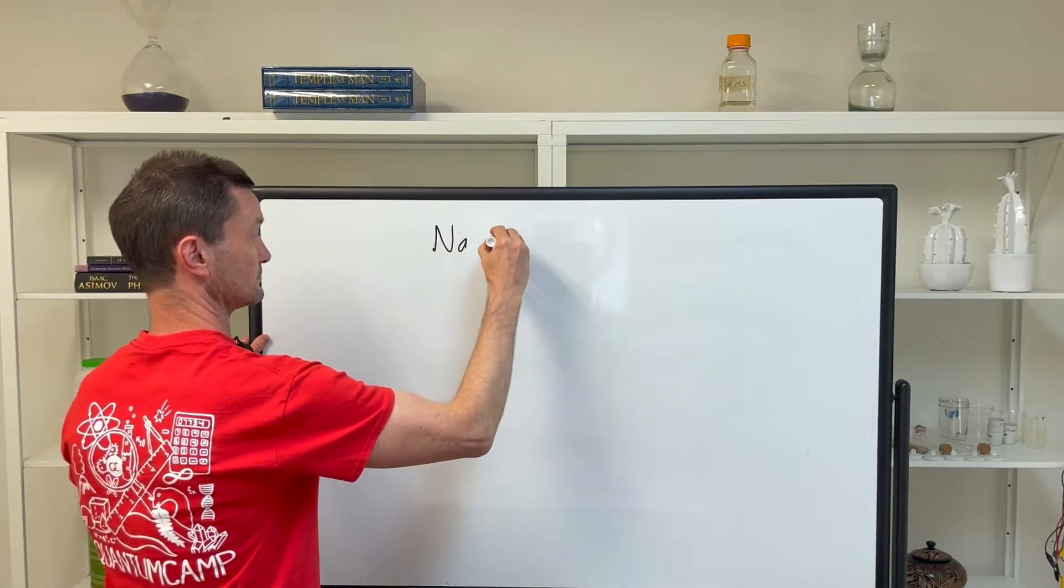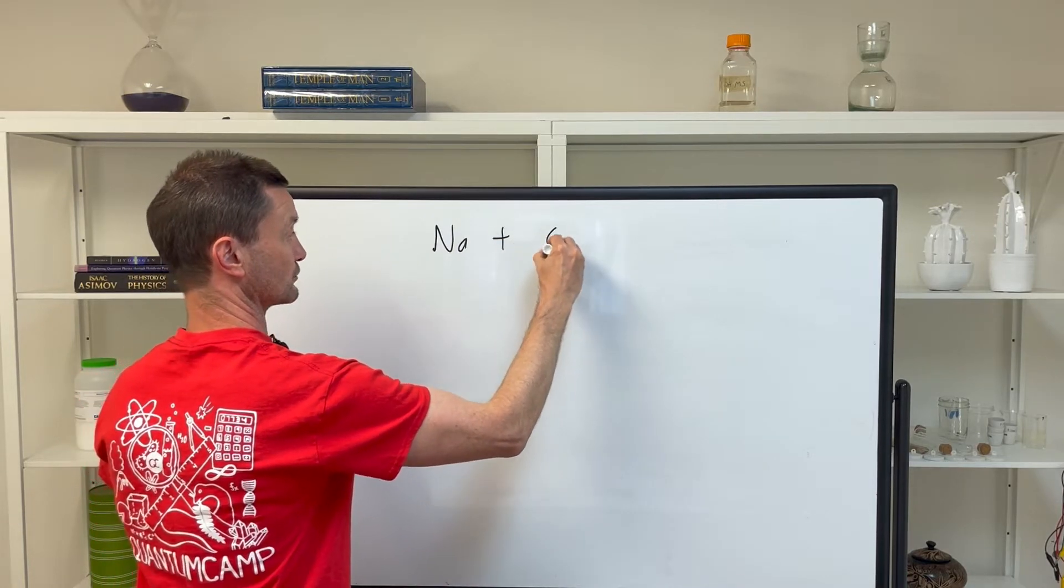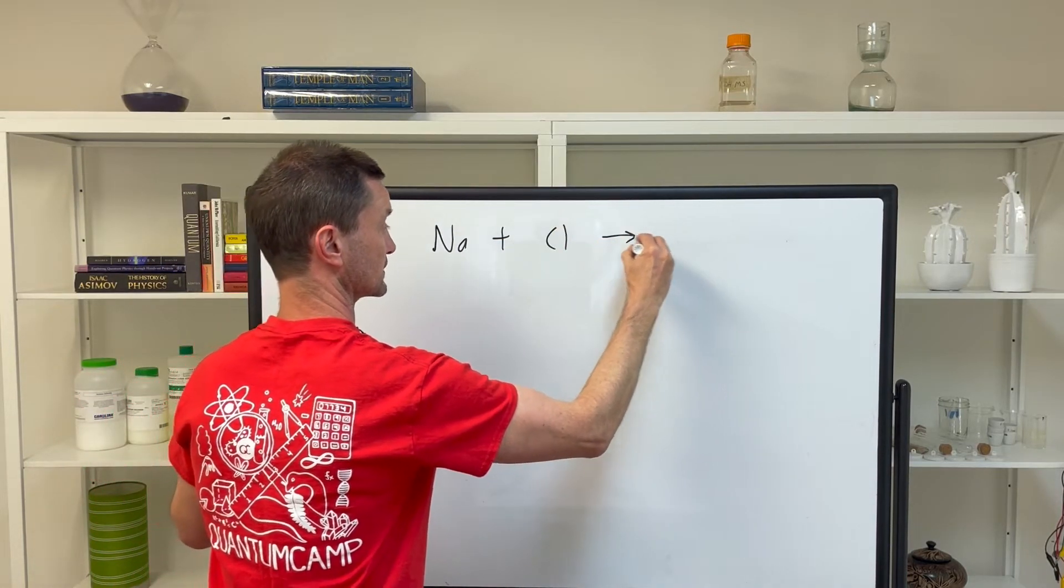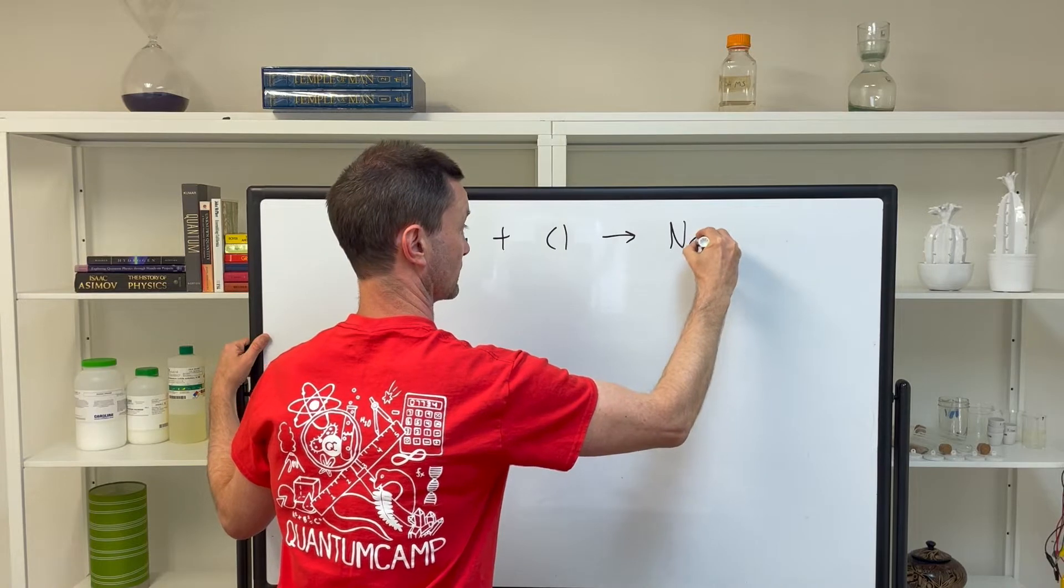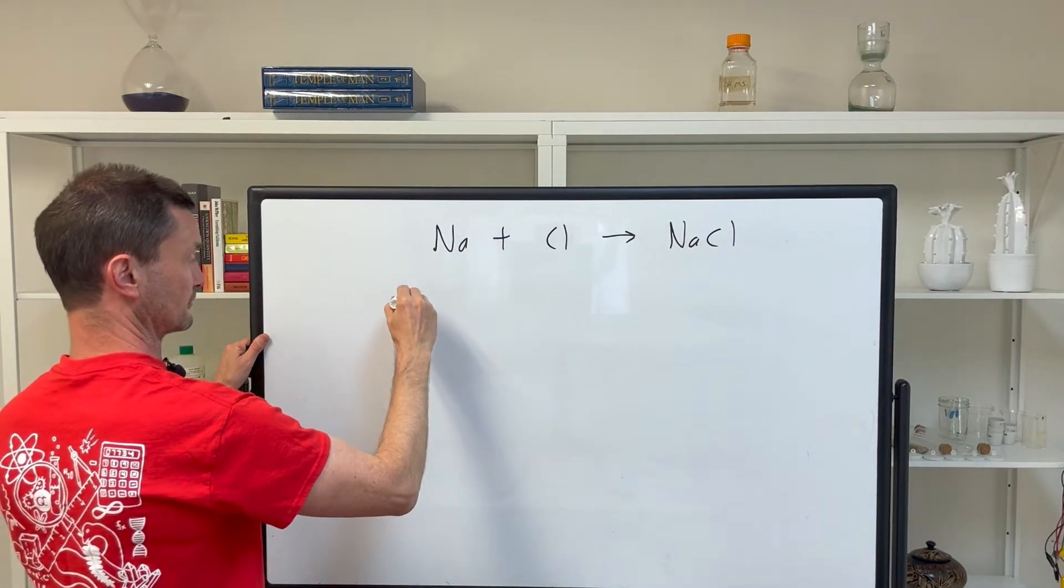So sodium, one sodium atom plus one chlorine atom can react to form sodium chloride. But what if it looks like this?